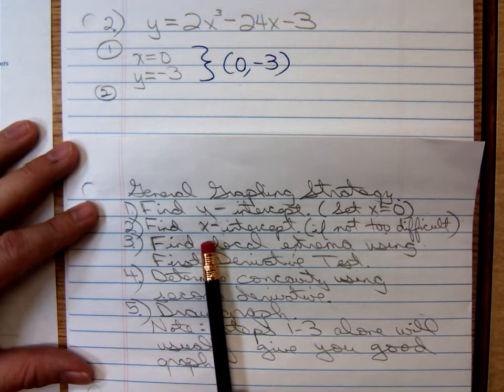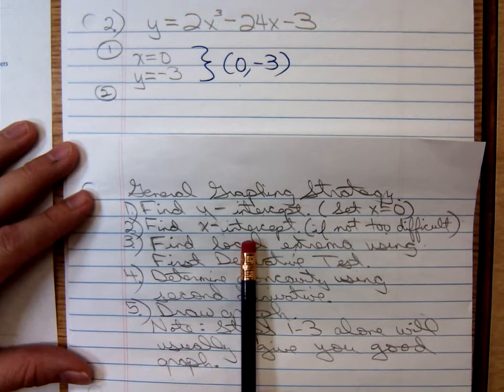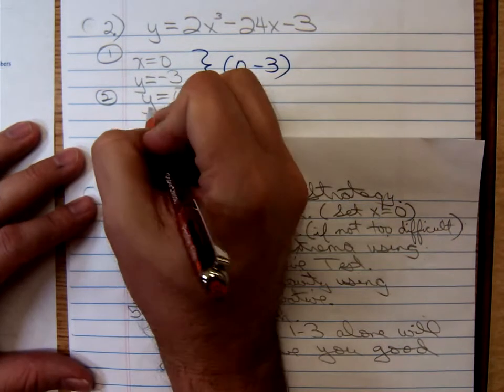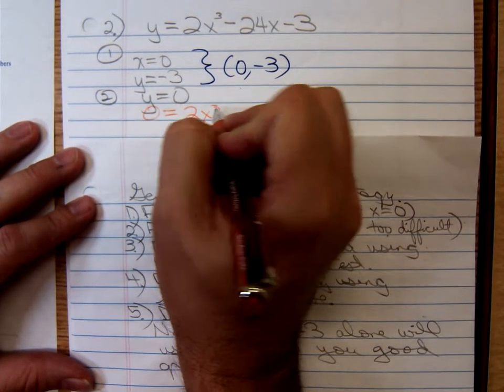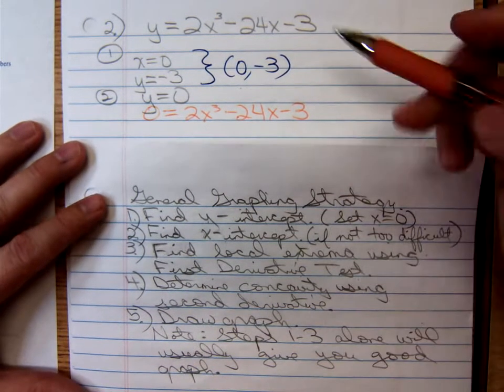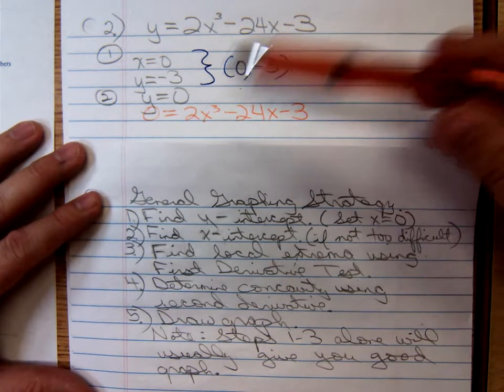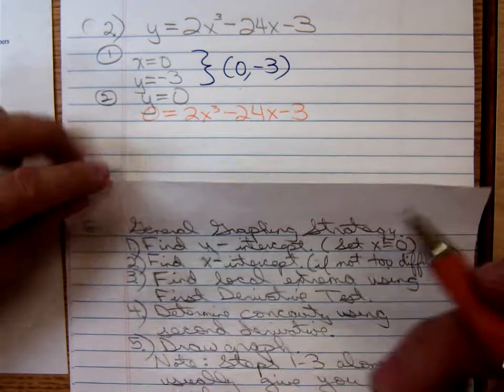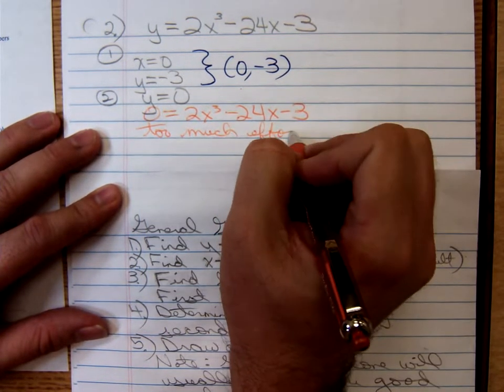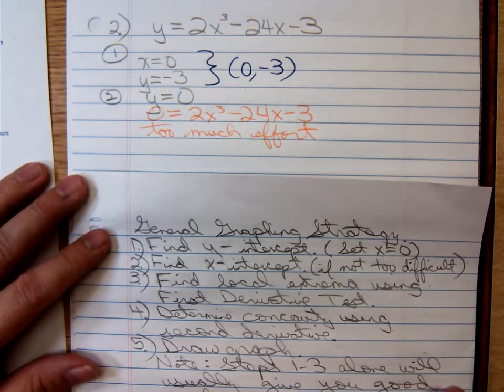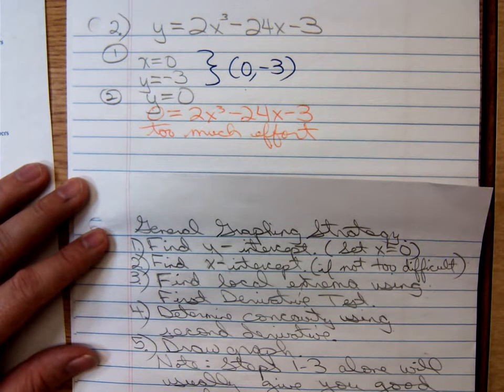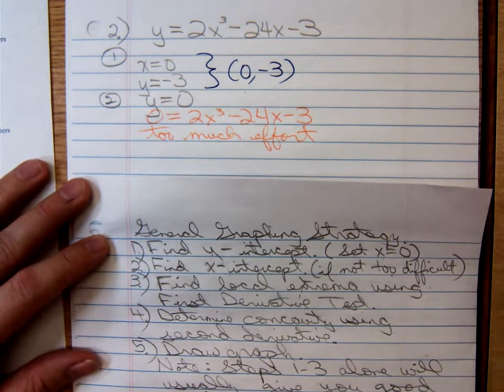Next we'll set y equal to zero. We're going to try to find the x-intercept if it's not too much work. Setting y equal to zero, what do y'all think I'm about to conclude? Yeah, too much work. This is a third degree polynomial. Trying to determine where that equals zero, it's not worth it. Too much effort for a very small payoff.